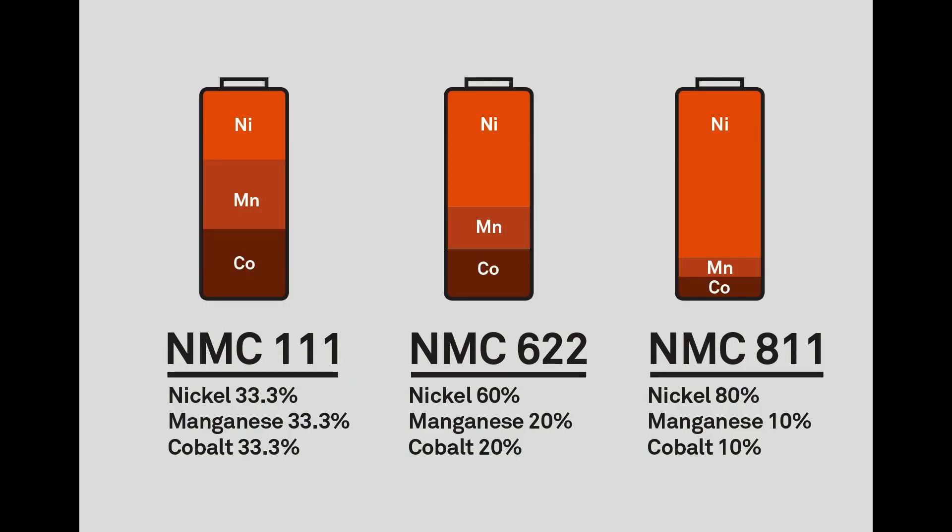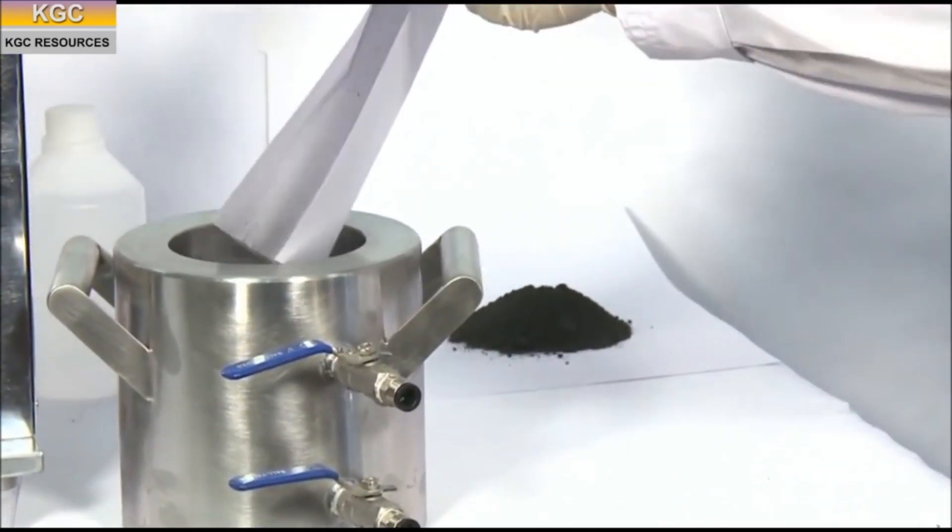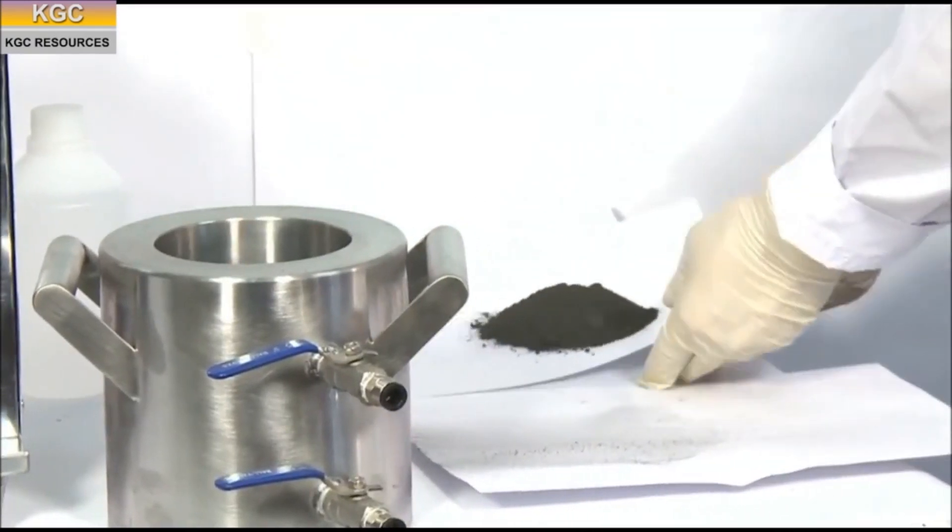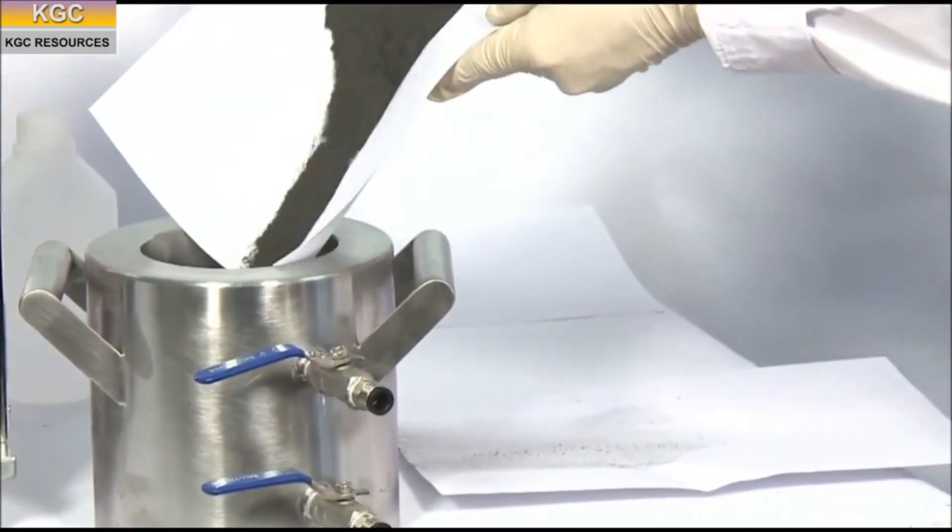In the cathode, this could be lithium nickel manganese cobalt or NMC and carbon black, for example. And in the anode, this could be graphite and carbon black.